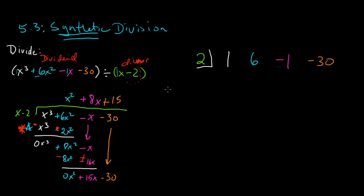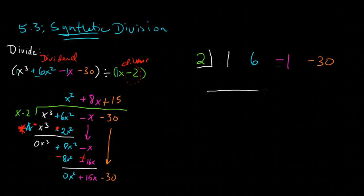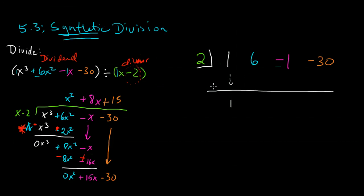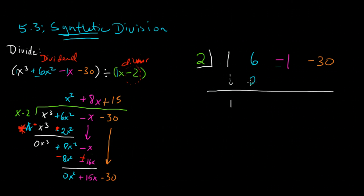So here's how synthetic division works. We will just bring down that first term there. So that's 1. And then we take and we multiply 2 times that 1, and that will give us the second part. So 2 times 1 is 2.